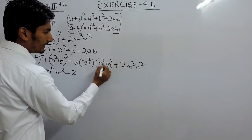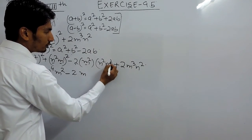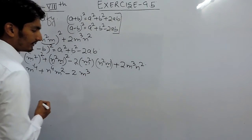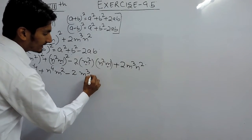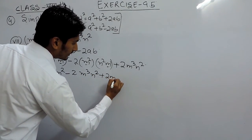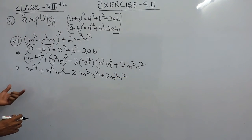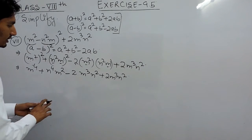So m² into m¹ will become m³, and at the last this will become n² and this value will remain as it is. Now if I have to further solve this, this and these are like terms. These can be solved.